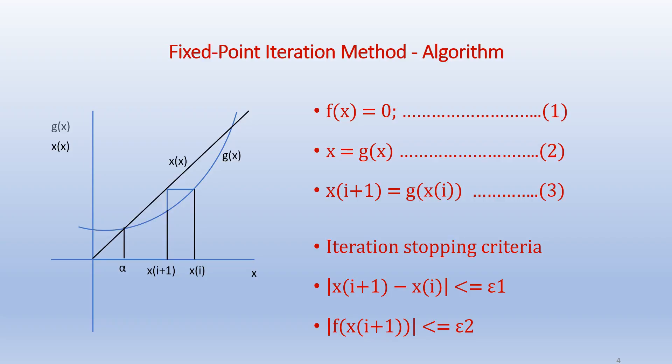The iteration stopping criteria: the absolute value of |x(i+1) - x(i)| should be less than or equal to epsilon 1, where epsilon 1 is a tolerance limit we specified, or |f(x(i+1))| the absolute value should be less than or equal to epsilon 2, which is another tolerance limit we specify.